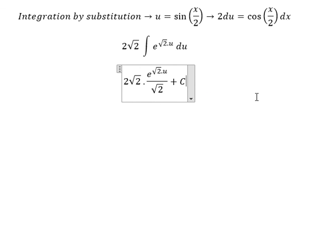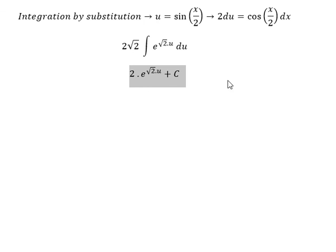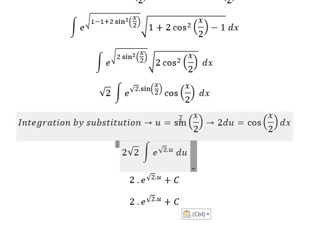And we have c as the constant. We have square root of 2 and square root of 2, they will cancel. Next, u is this one.